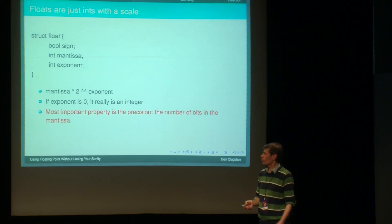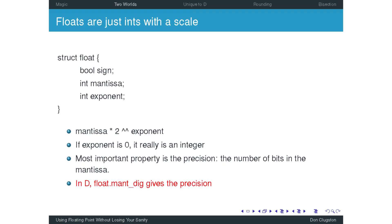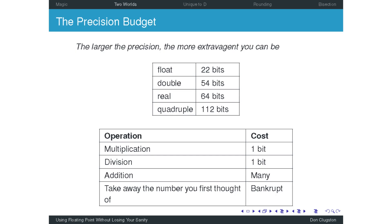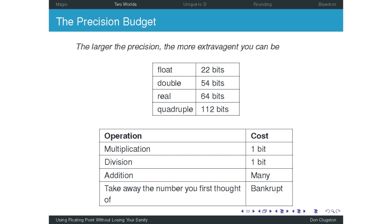So in the magician's world, floats are just ints with a scale. You've got a sign, a mantissa or a significand, and an exponent. And the number is just the mantissa times two to the power of the exponent. And if the exponent's zero, it's just an integer. The most important... Whoa. And I thought floating point was weird.